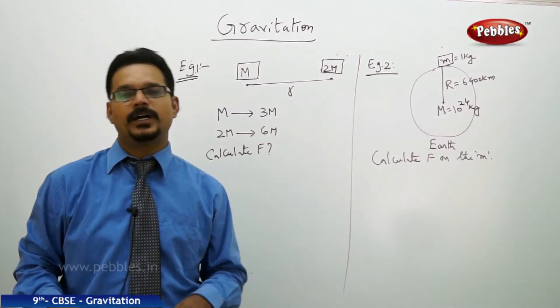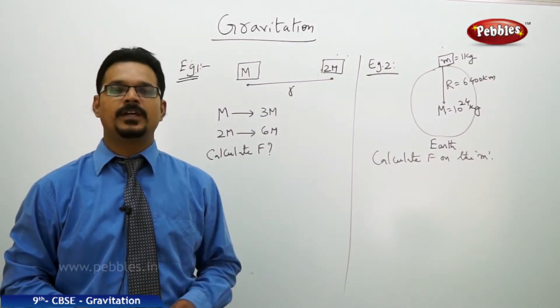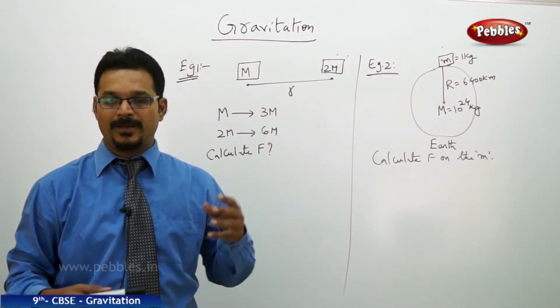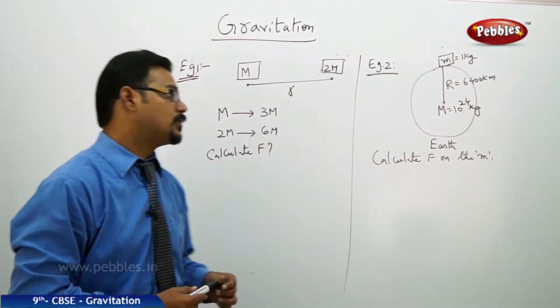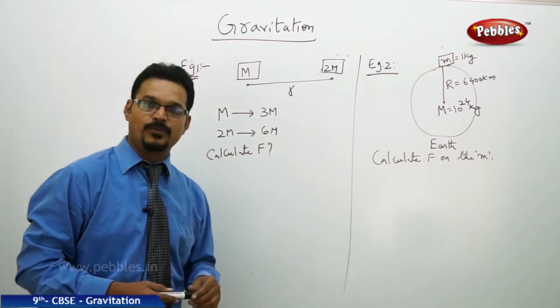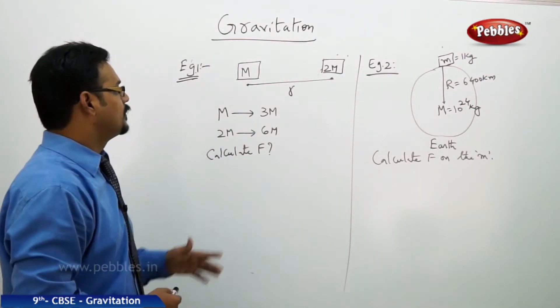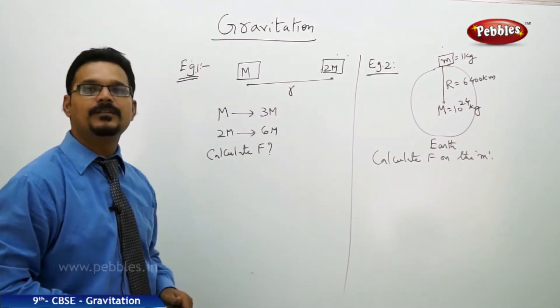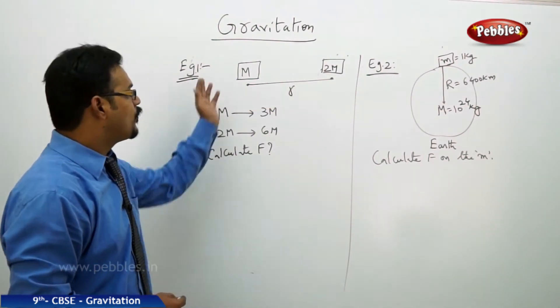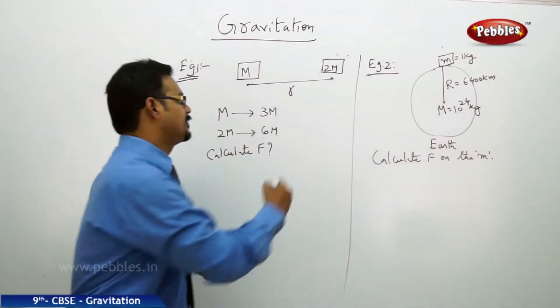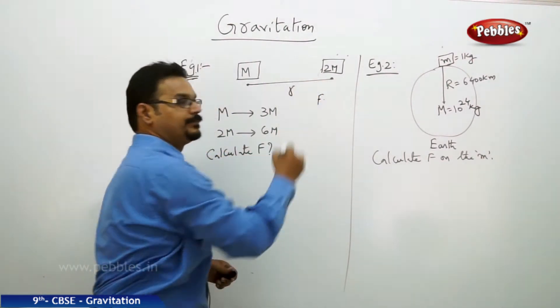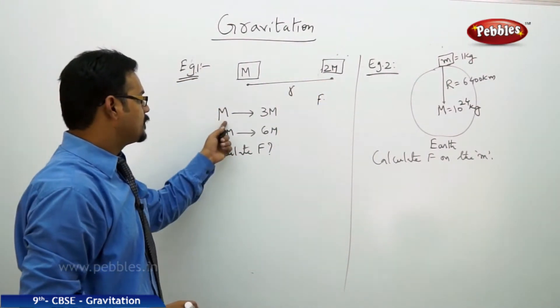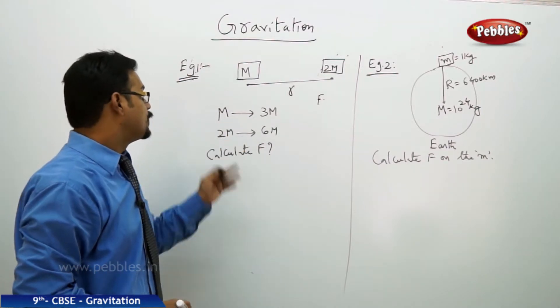So we understood what is Newton's law of gravitation and what is the formula. Now apply the knowledge for solving these two example problems. The first example: two bodies of masses m and 2m separated by distance r, and the force acting between them is f. Now the mass m changes to 3m, 2m changes to 6m by keeping the distance constant.